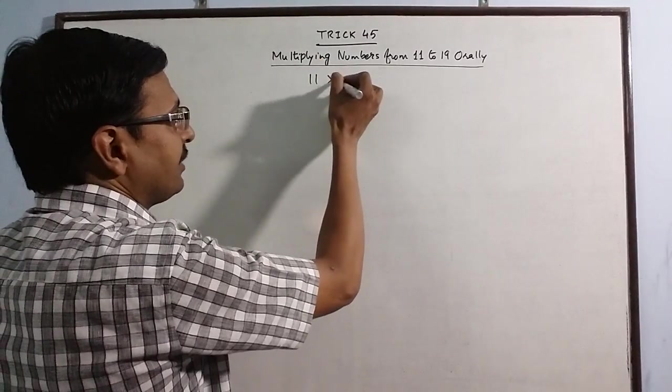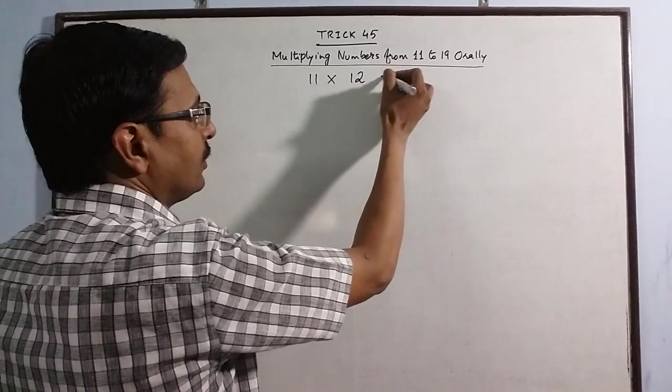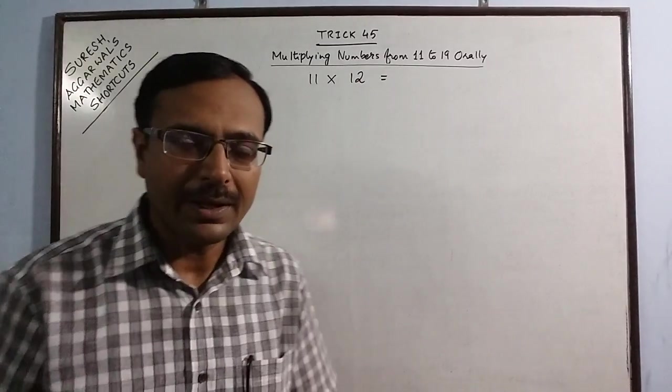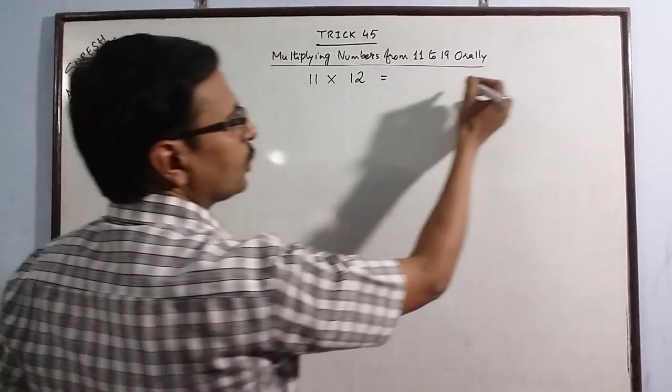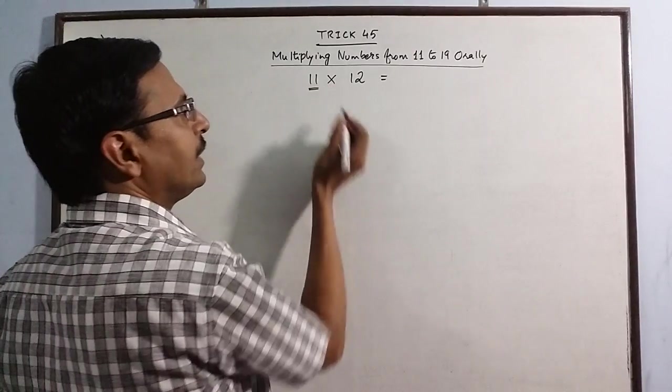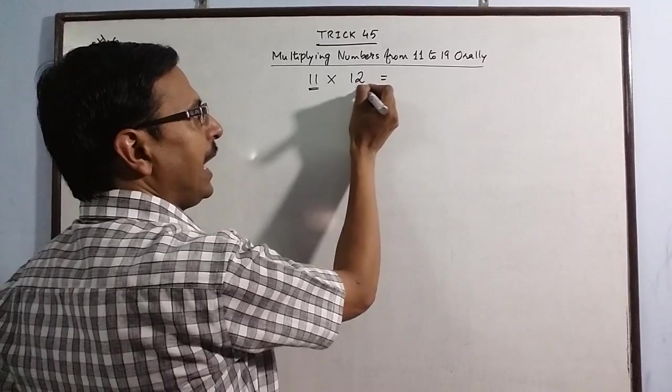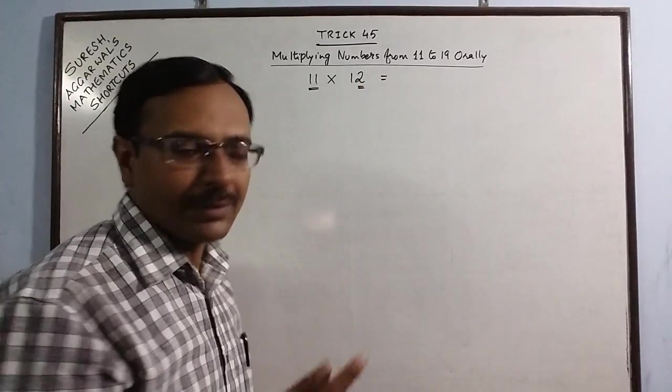Here I take two numbers 11 into 12. To demonstrate this method, I have two steps. The first step is to take the first number and add the unit digit of the other number.